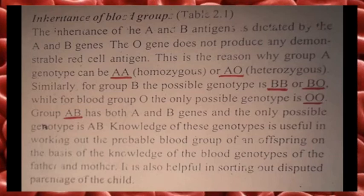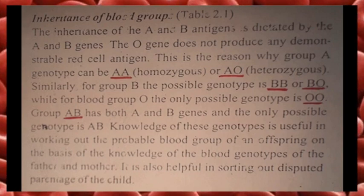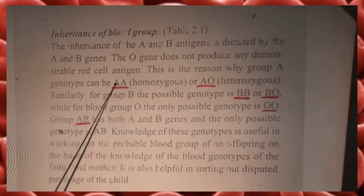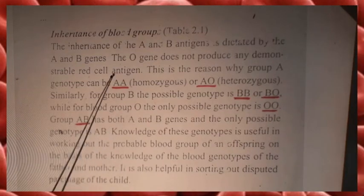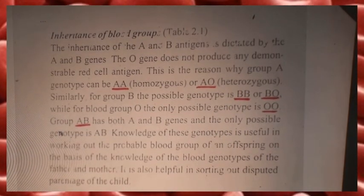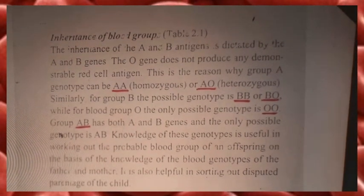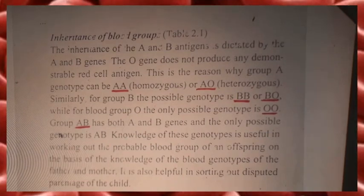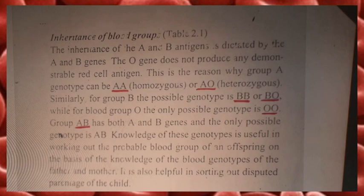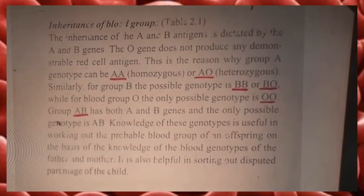The inheritance of the classic blood groups: the A blood group phenotype can be either homozygous AA or heterozygous AO. Similarly, the B blood group is either BB or BO. The AB group has both A and B antigens, while the O blood group has no antigens and its genotype is OO — the O allele being recessive.